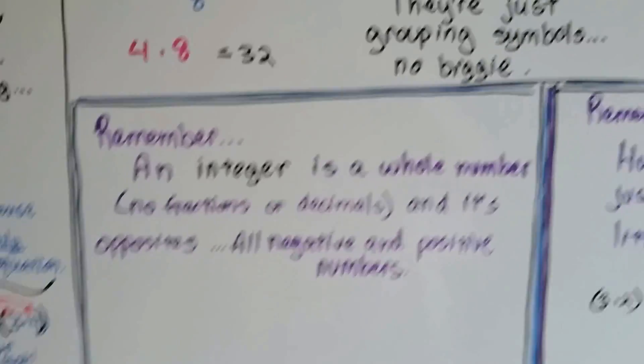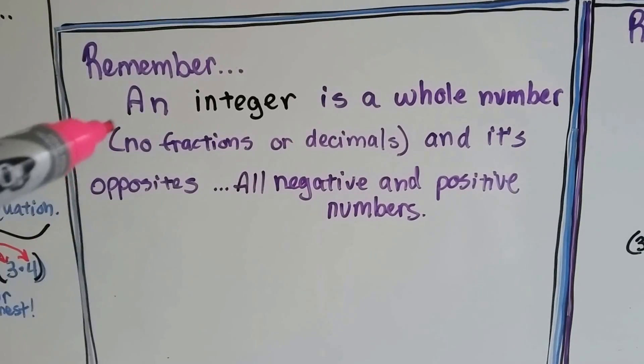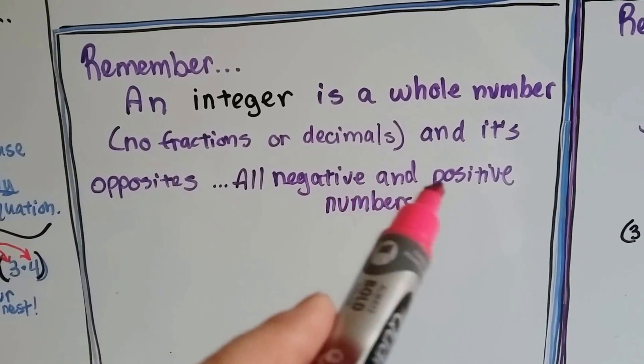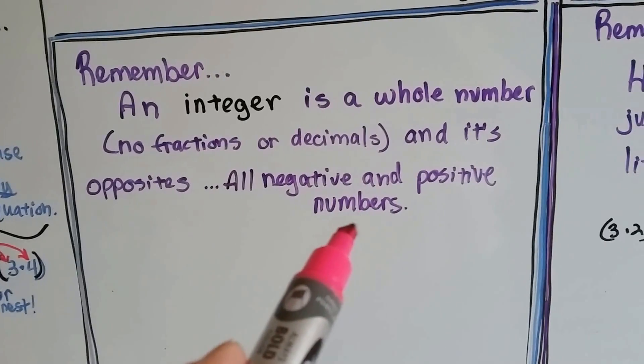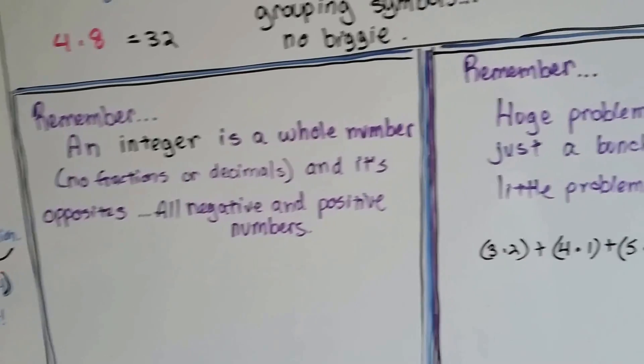All right. We've got more to remember. I want you to remember that an integer is a whole number and its opposites. No fractions or decimals allowed. It's a whole number and its opposites. That means it's all negative and positive numbers. No fractions or decimals. Other than that, both sides of the number line, it's an integer.